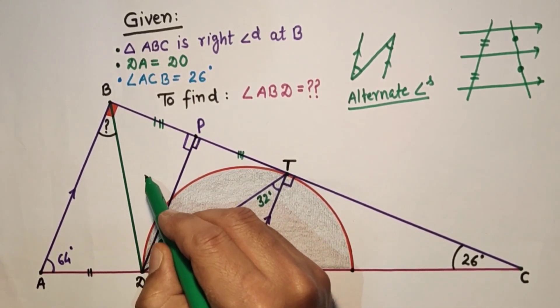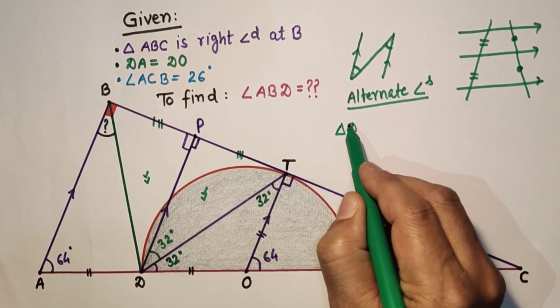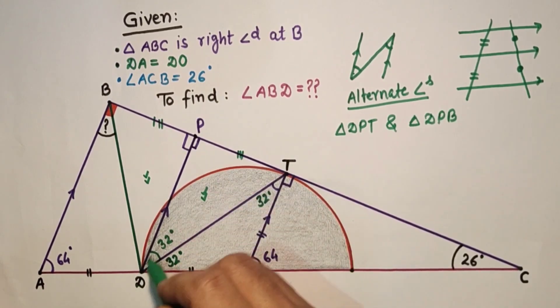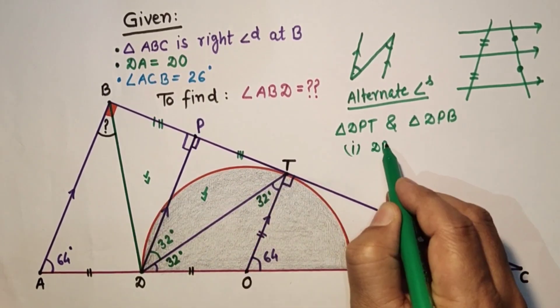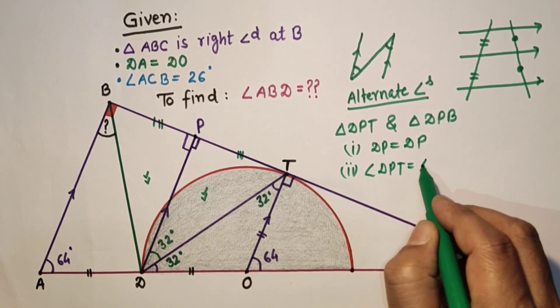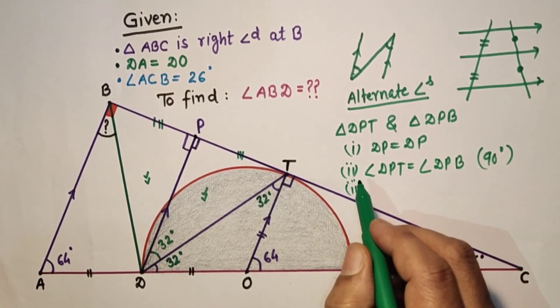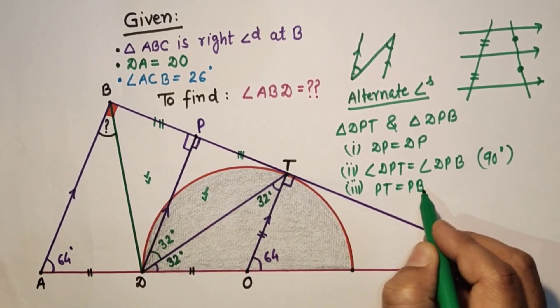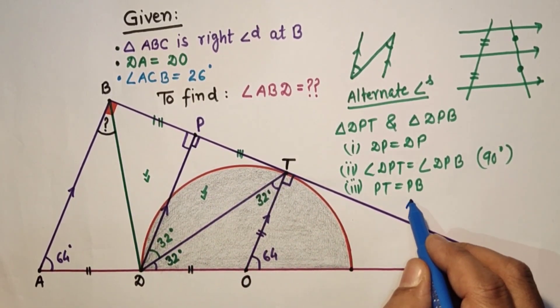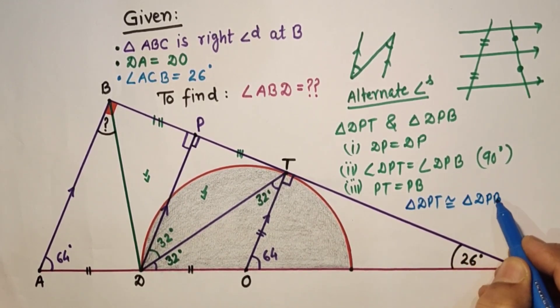Now consider these two triangles, triangle DPT and DPB. Triangle DPT and triangle DPB. First thing, DP is equal to DP, common side. Second, angle DPT is equal to angle DPB, each right angle, 90 degrees. And third, by equal intercept theorem, PT is equal to PB. So by side angle side test, these two triangles are congruent. Triangle DPT is congruent to triangle DPB by SAS test.